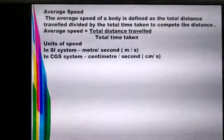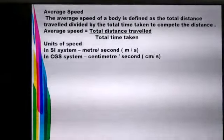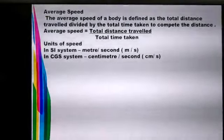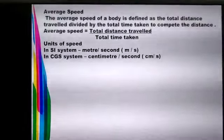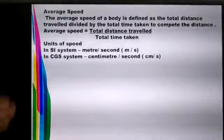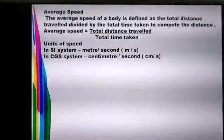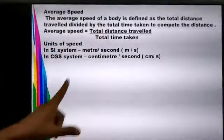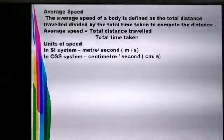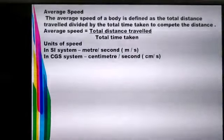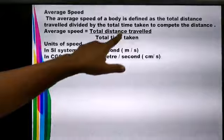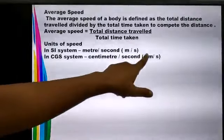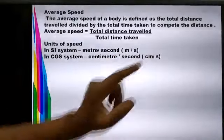The average speed of a body is defined as the total distance traveled divided by the total time taken to cover that distance. The formula for average speed is: total distance traveled divided by total time taken. In the SI system the unit is meters per second (m/s), and in the CGS system the unit is centimeters per second (cm/s).